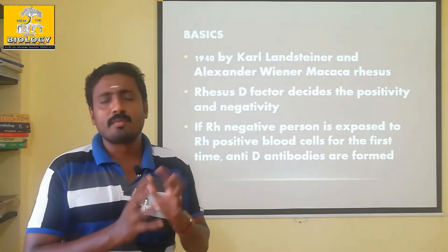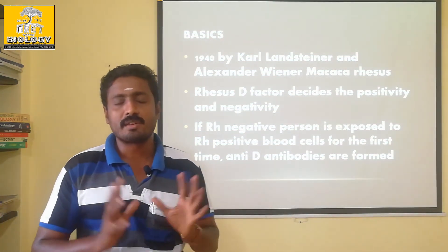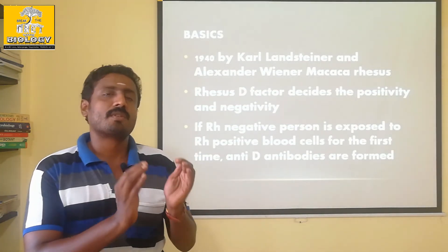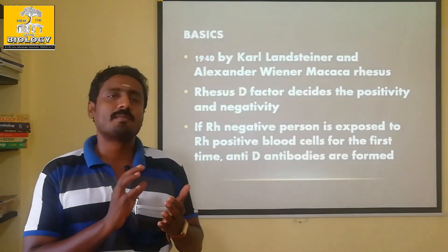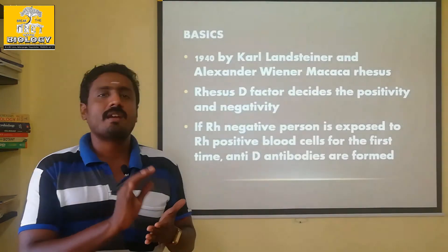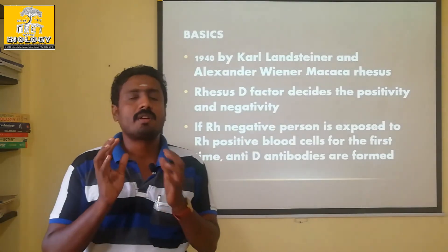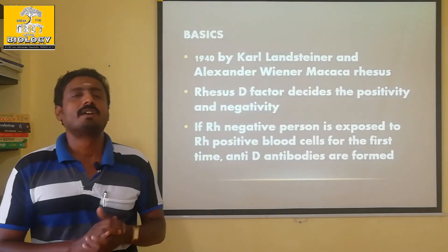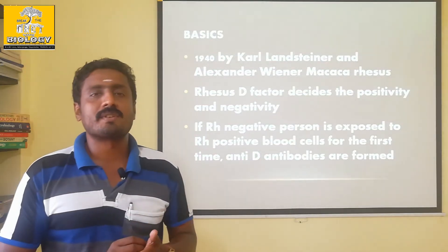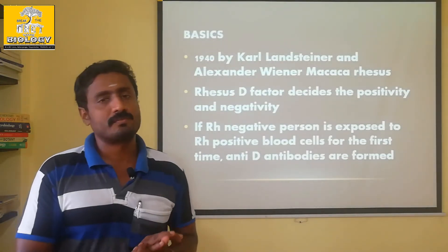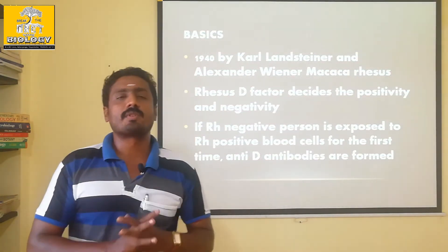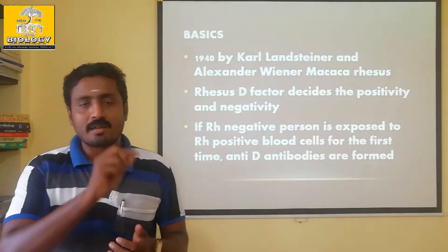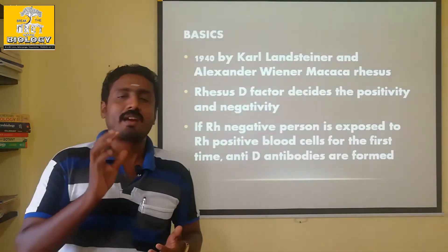If you consider what blood group it is — on the RBC surface, there are antigens. In blood group A, there is A antigen on the RBC surface. In blood group B, there is B antigen on the RBC surface.